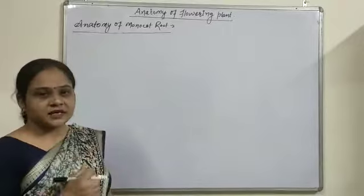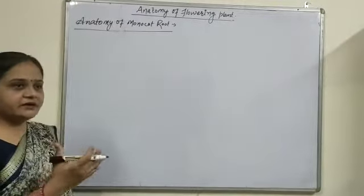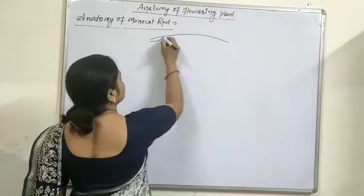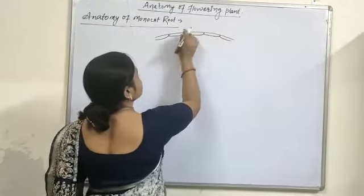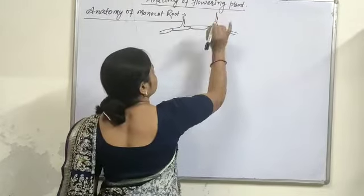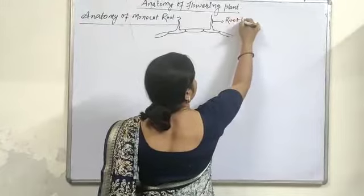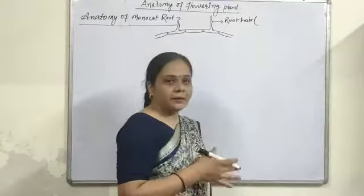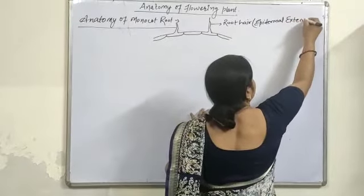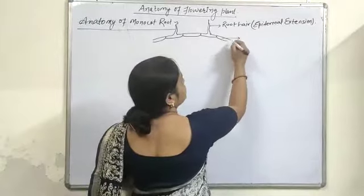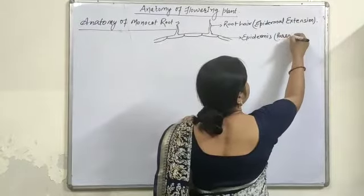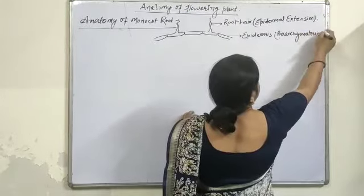One difference is the vascular bundle strength and the second one is the pith. Take a look at the diagram and we can easily differentiate between them. First of all, there is present a single-layered epidermal cell, or epidermis. This epidermis is parenchymatous and single-layered.